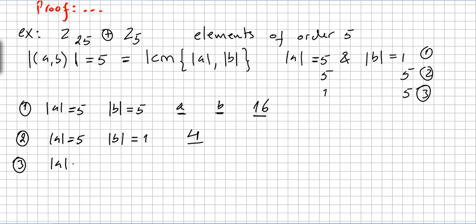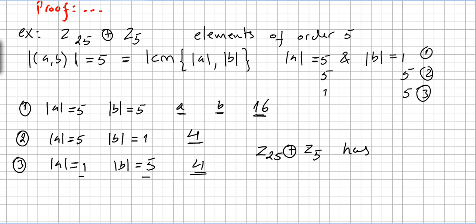Case 3: order of a is 1 and order of b is 5. This time we have one choice for a and four choices for b, giving four more elements of order 5. So altogether, Z25 external direct product Z5 has 16 + 4 + 4 = 24 elements of order 5.